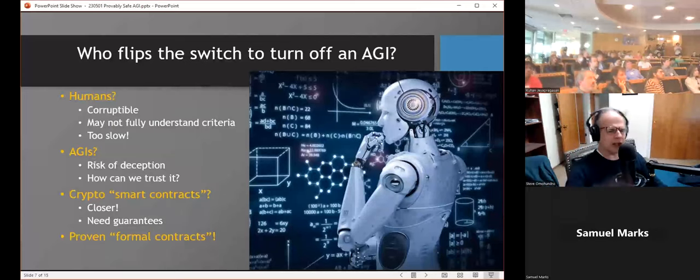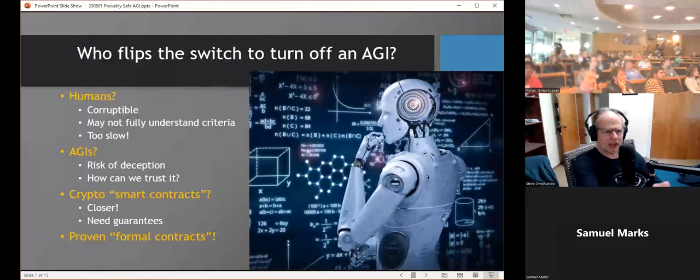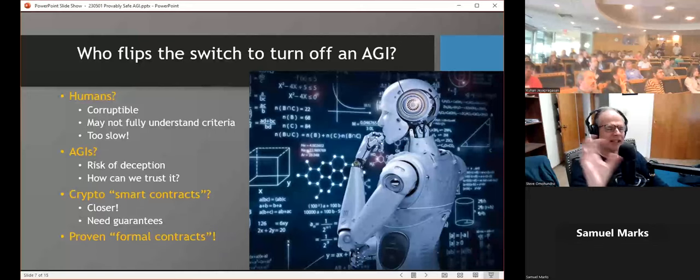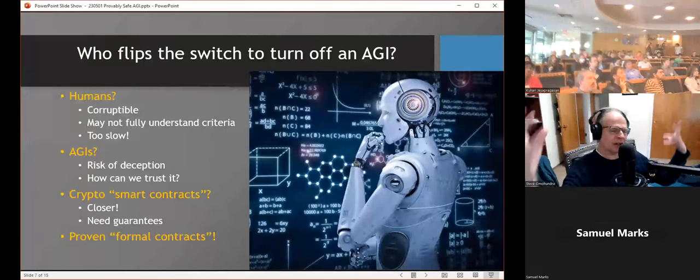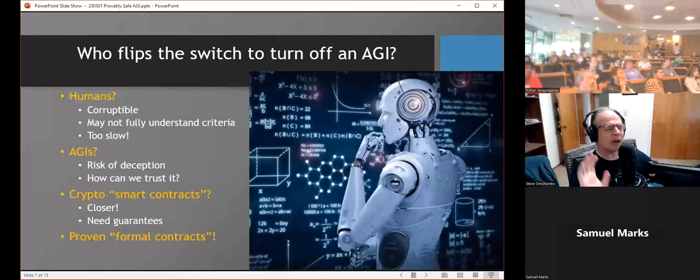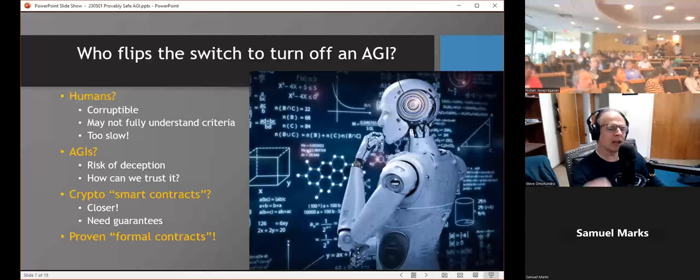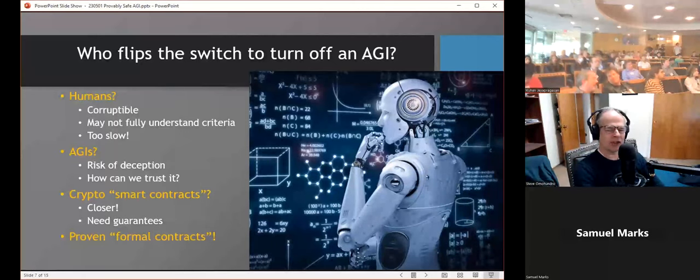So the question is, let's say we get into a regime where we treat this as Connor was saying, kind of as a military or biohazard project with very powerful controls. Well, who exactly should flip the switch to turn off an AGI should some suspicious looking circumstances arise? Many people say we need humans in the loop, a human watching the switch and flipping it. Well, the problem with humans is that humans are corruptible. In particular, AGIs can manipulate humans and they may not fully understand the criteria. Humans are slow, operating on human timescale. Humans is probably not the right thing for provable guarantees of safety. So then you think, well, our most powerful systems will be AGIs. We should have another AGI watching and turn it off. Well, but then how do we trust that AGI? How do we get a sense of trust that this is going to behave the right way? We actually want something much simpler than an AGI.